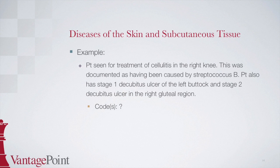For the next example, the patient was seen for treatment of cellulitis in the right knee. This was documented as having been caused by streptococcus B. The patient also has a stage 1 decubitus ulcer of the left buttock and a stage 2 decubitus ulcer in the right gluteal region. How would you code this? Please pause the webinar to complete this example and then hit play to learn the answer.